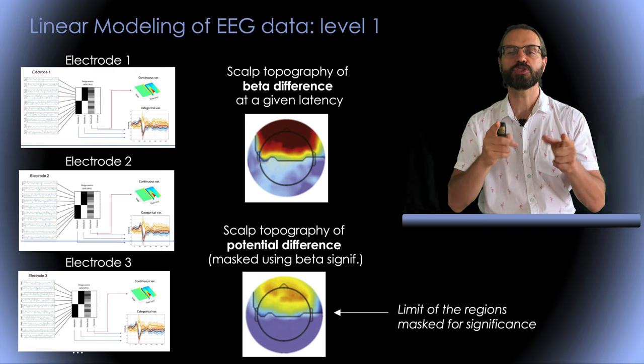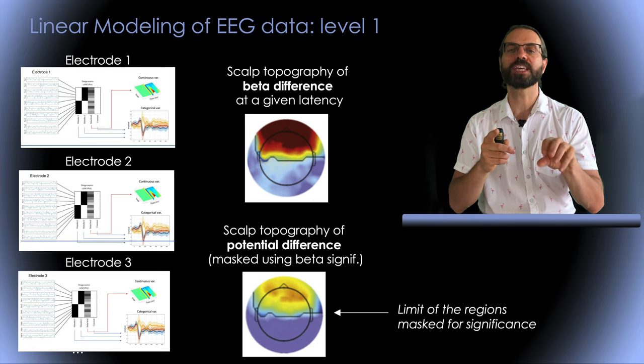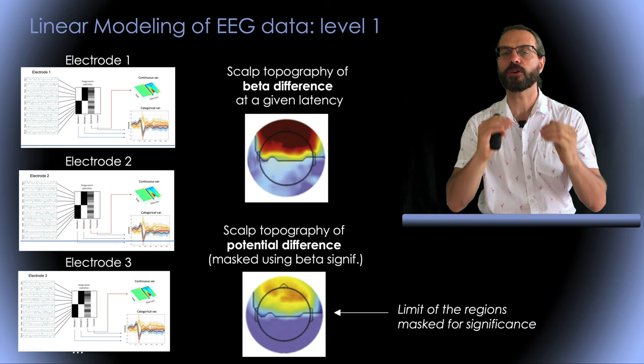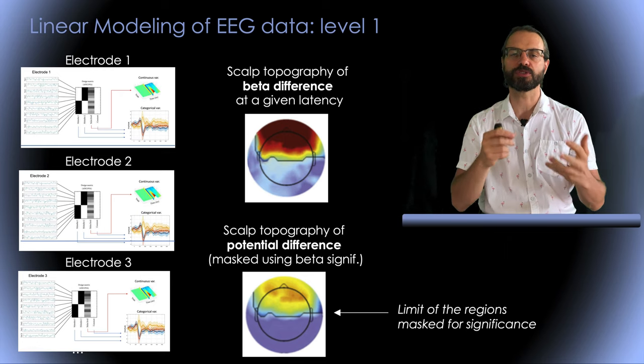Again, if you just have two types of stimuli in your model, applying this mask would be equivalent to performing a t-test between two sets of ERP for each stimulus and thresholding the scalp topography at a p-value of 0.05.